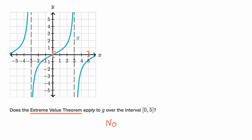If instead they had offered us a closed interval where we were continuous — say between negative two and zero — then the extreme value theorem would apply. You would say that over this interval the function has a well-defined minimum value and a maximum value. In this case, the maximum would happen at the right bound and the minimum value happens at the left bound.